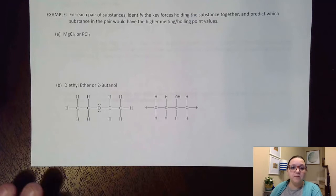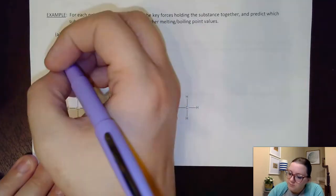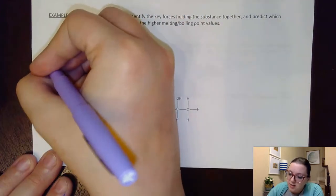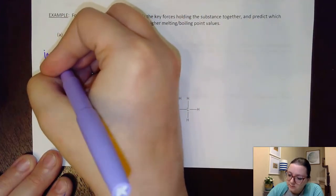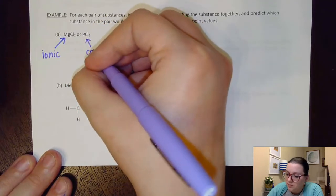So to start us off here, our first matchup is MgCl2 versus PCl3, and the first thing I want to do to identify my forces holding a substance together is see if it's ionic or covalent. For MgCl2, that's a metal-nonmetal combination, so that's ionic, whereas PCl3 is nonmetal-nonmetal, so that would be covalent.